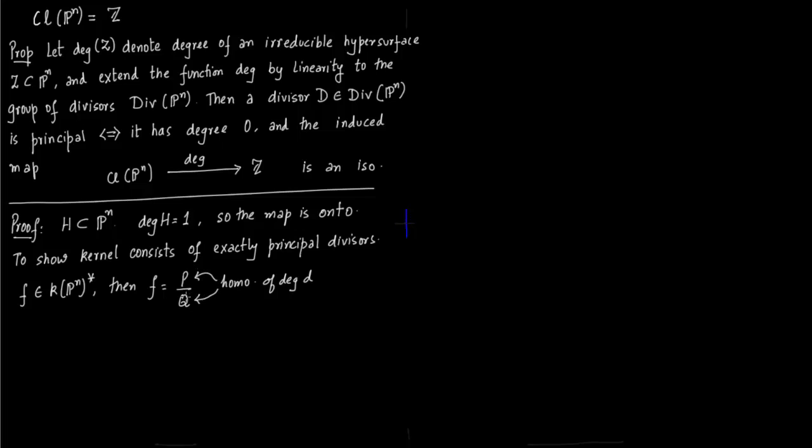F is of the form P by Q. Since we are on the space P^n, both numerator and denominator have to have equal degrees. P is homogeneous of degree D, Q is homogeneous of degree D.